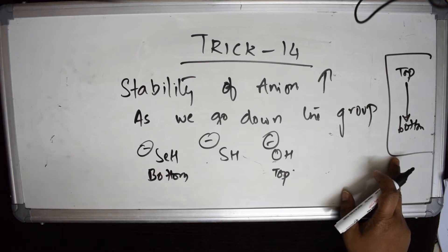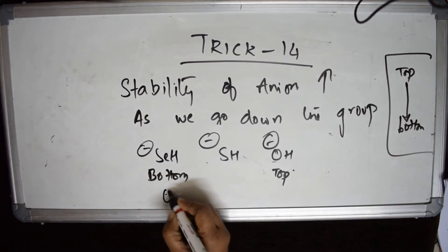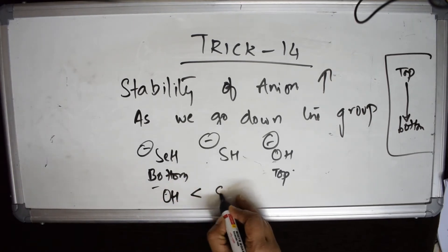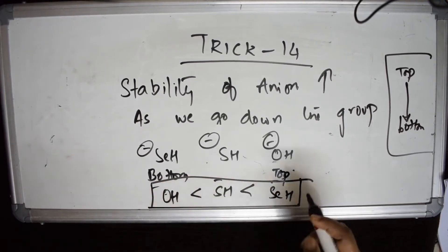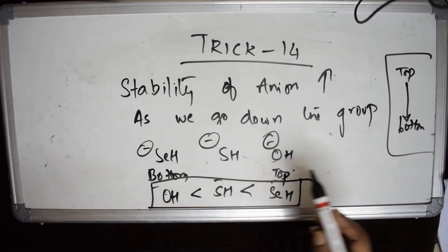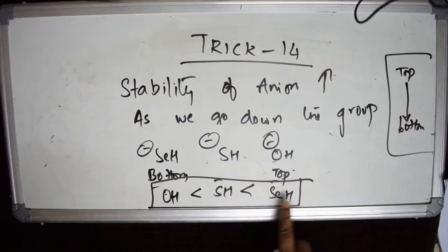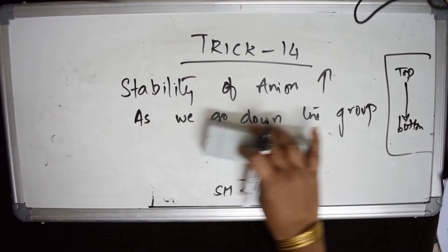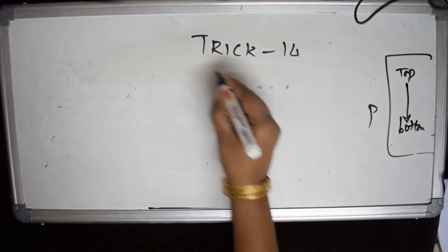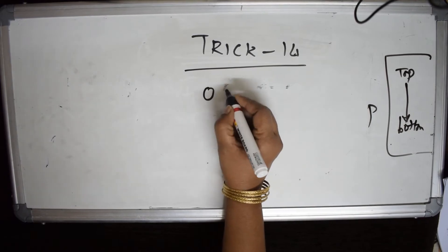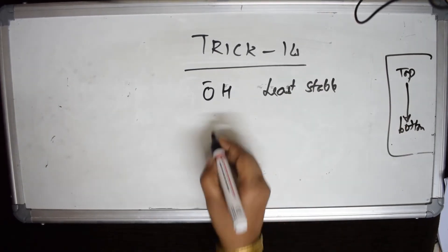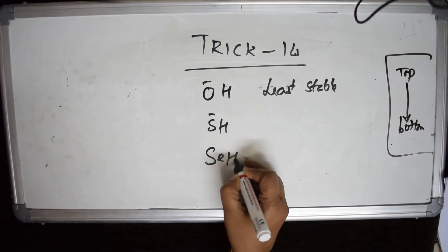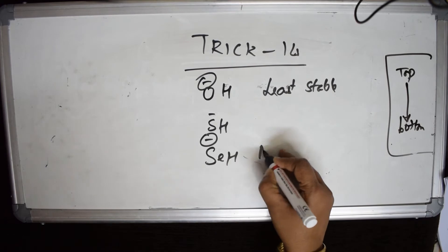According to the polarizability concept, the one at the bottom is most stable. So the order is: OH⁻ is less stable than SH⁻, which is less stable than SeH⁻. The top element's anion is least stable, and the bottom element's anion is most stable.